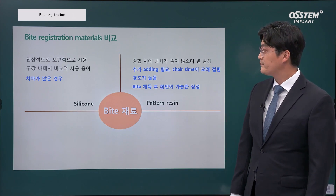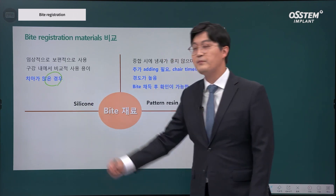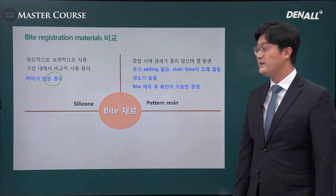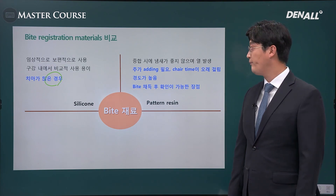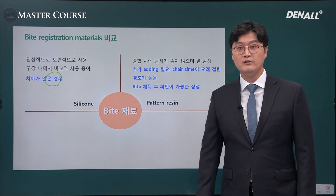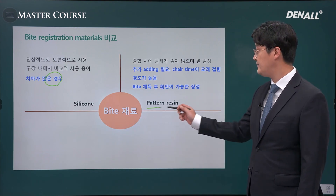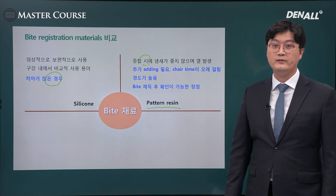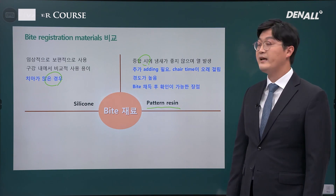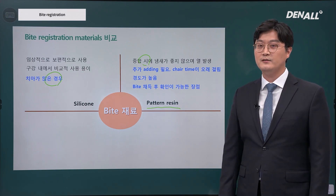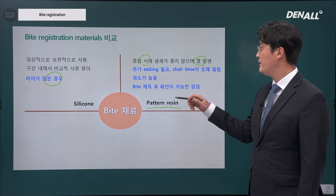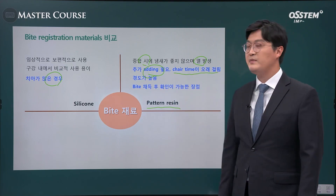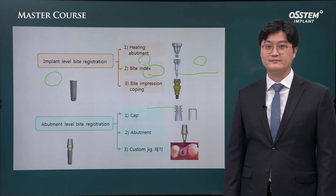Polyvinyl siloxane and wax materials are sometimes used for convenience, with polyvinyl siloxane being the most popular. If there are many teeth — in other words, if there are many contact points when mounting the articulator — silicone material, polyvinyl siloxane, is the preferred option. If there is a large edentulous area, rigid material such as pattern resin would be the better option. However, pattern resin generates heat and smell during polymerization, so a patient in the mouth can get burned. It's better to cool it off first, and if the bite is low, pattern resin needs to be additionally added, which takes a lot of chair time because it takes time to harden.